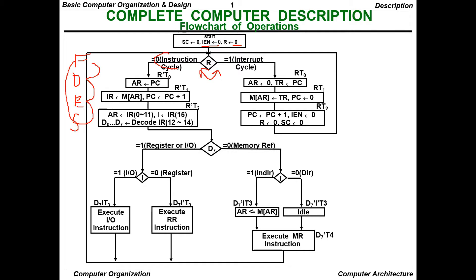At R-dash-T2, the instruction register bits 0 to 11 are for the address, bits 12 to 14 are for the opcode, and bit 15 is for I. The 0-to-11 portion of the instruction register goes to the address register. Bit I decides whether execution goes to register reference or memory reference instructions.